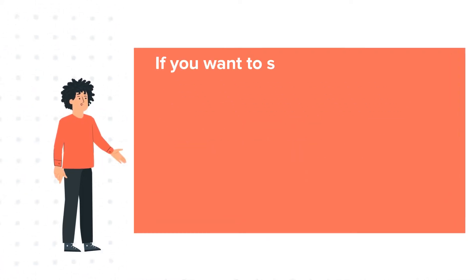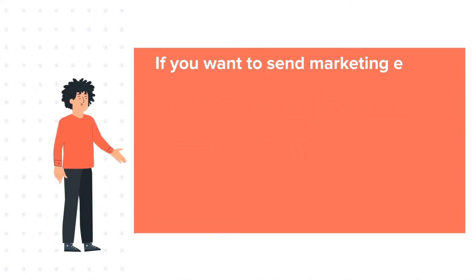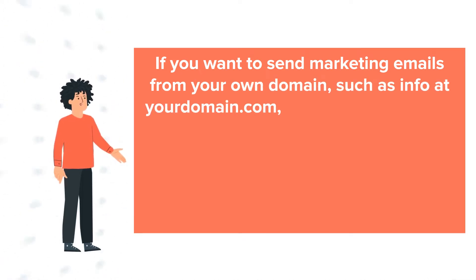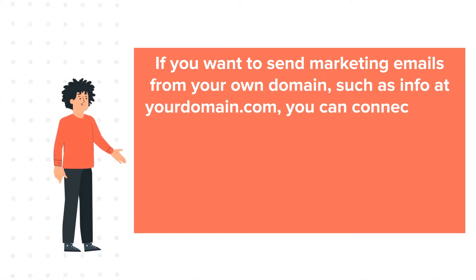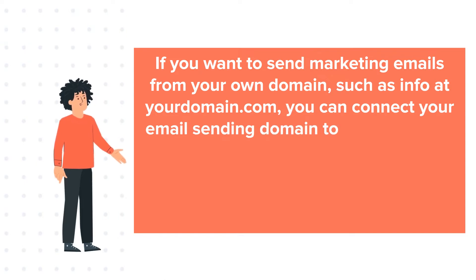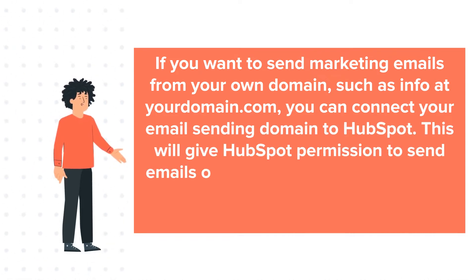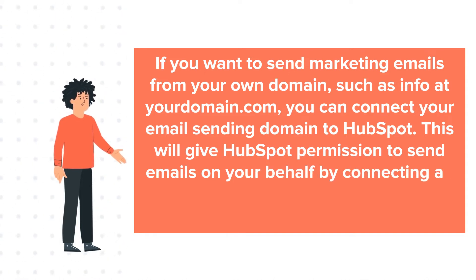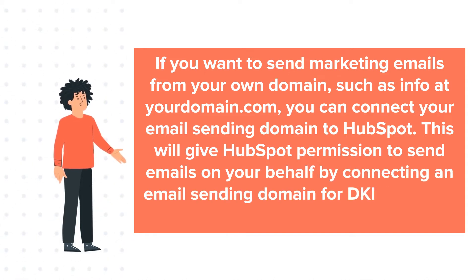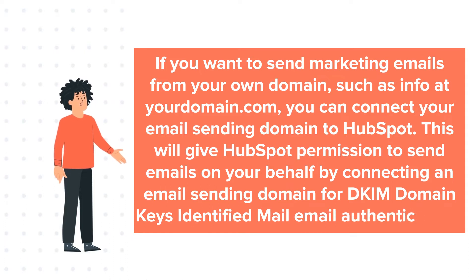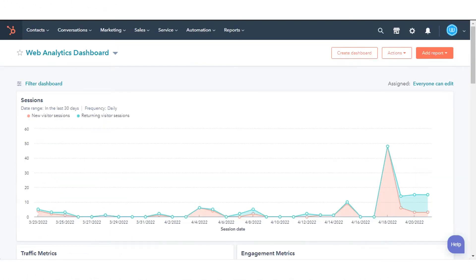If you want to send marketing emails from your own domain, such as info@yourdomain.com, you can connect your email sending domain to HubSpot. This will give HubSpot permission to send emails on your behalf by connecting an email sending domain for DKIM (DomainKeys Identified Mail) email authentication. Let's see how to do this.